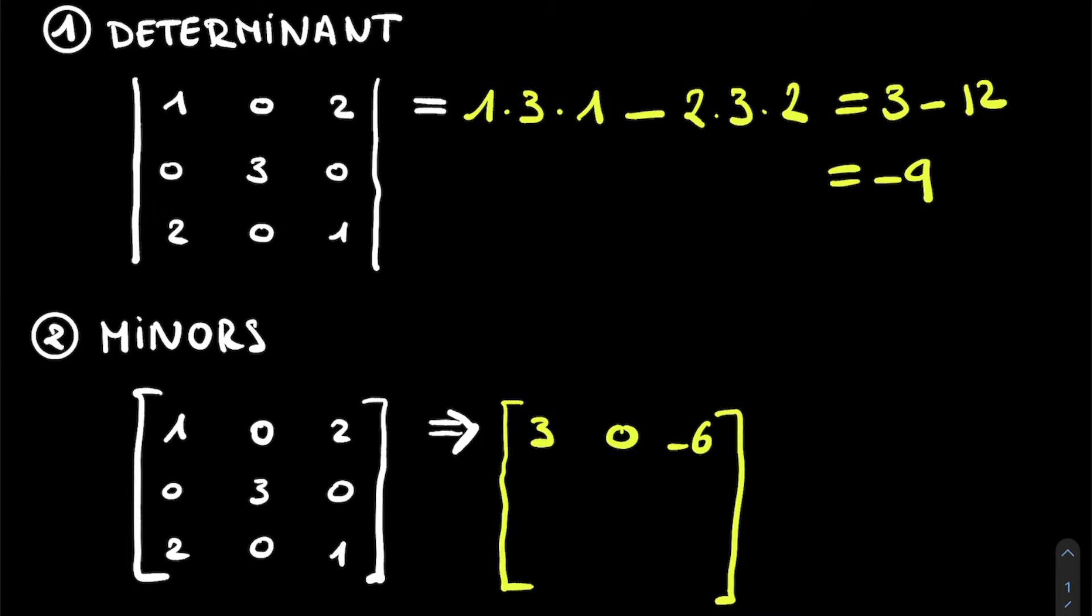Now the same process can be done for all of the remaining 6 elements. And if we do so, which can be done quite quickly, we get 0, minus 3, 0, minus 6, 0, and 3. And this will be our matrix minor. So it will be the matrix M, the matrix of our minors.